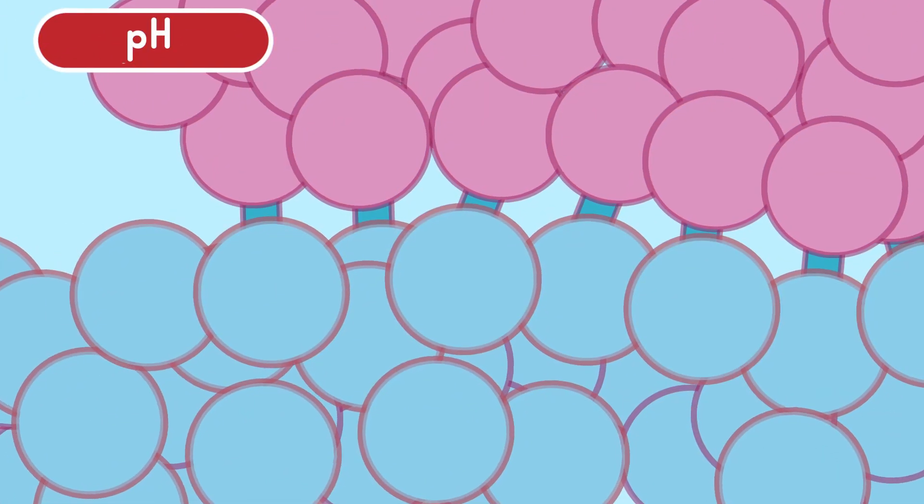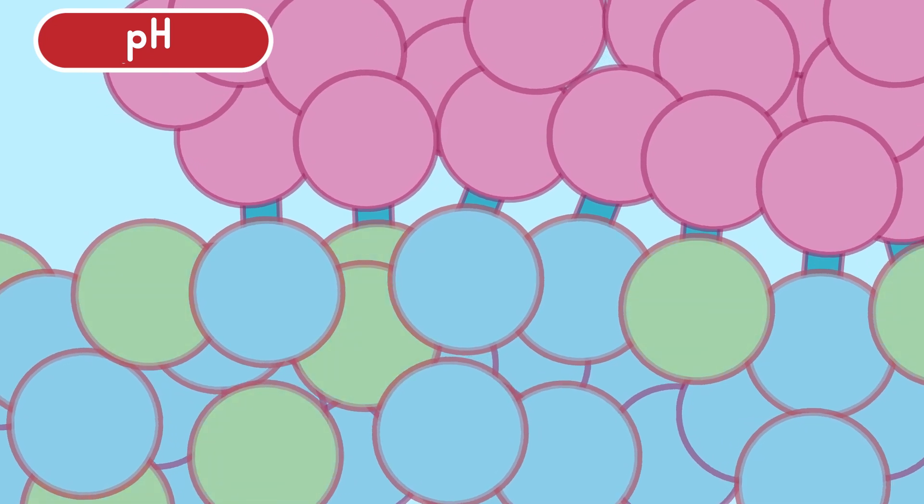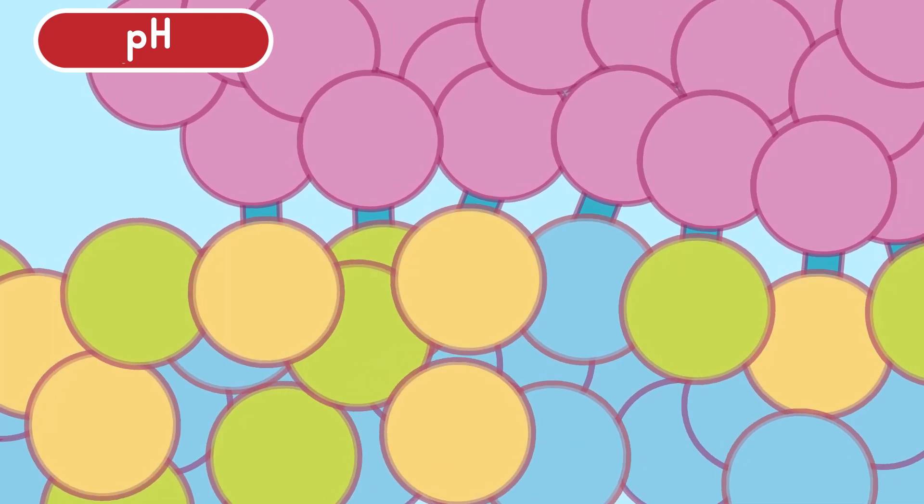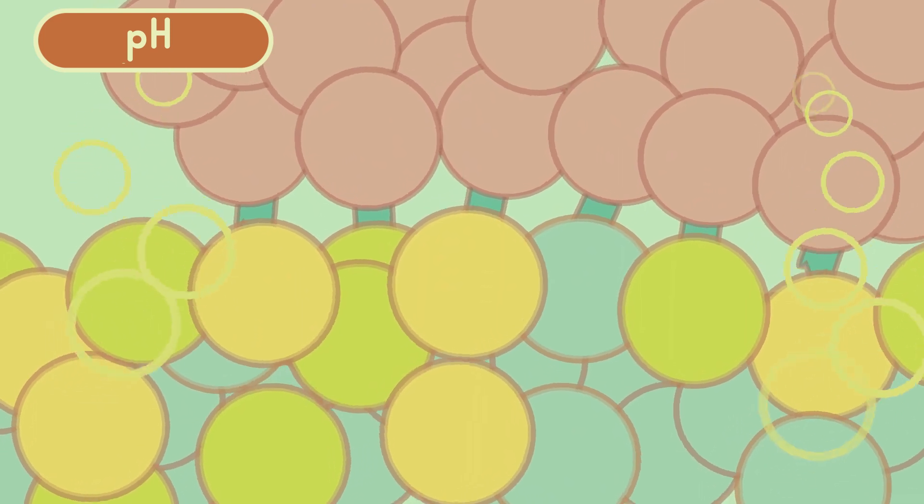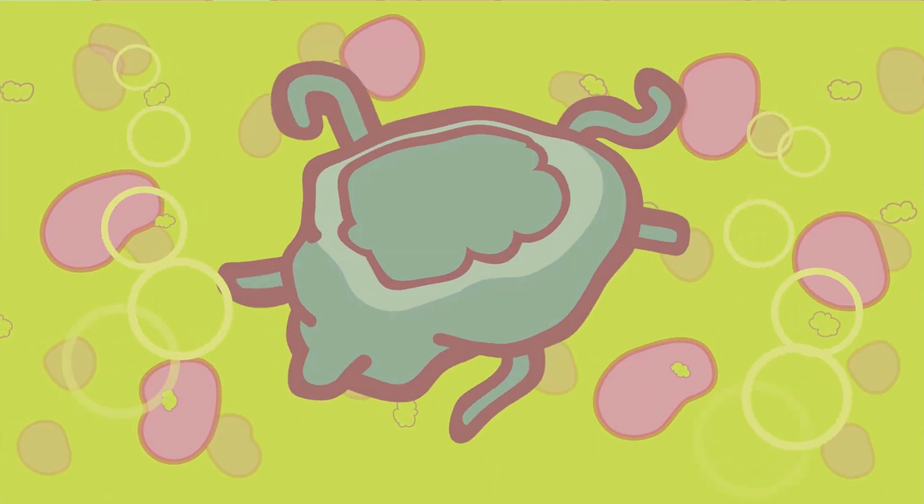pH. Amino acids present in the active site are acidic or basic. Fluctuation in pH can affect these amino acids, making it hard for substrates to bind. Extreme pH values can denature enzymes.